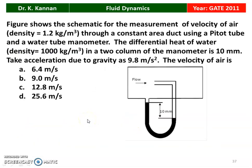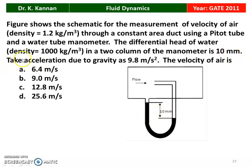Next question from the 2011 question paper. The figure shows the schematic for measurement of velocity of air of density 1.2 kg/m³ through a constant area duct using a pitot tube and a water tube manometer. The differential head of water (density 1000 kg/m³) in the manometer column is 10 millimeters. Take acceleration due to gravity as 9.8 m/s². The correct velocity of air is 12.8 meters per second.